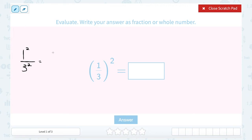And now we can work it out. 1 squared or 1 times 1 gives us 1, and 3 squared or 3 times 3 gives us 9. So our answer would be 1 over 9.